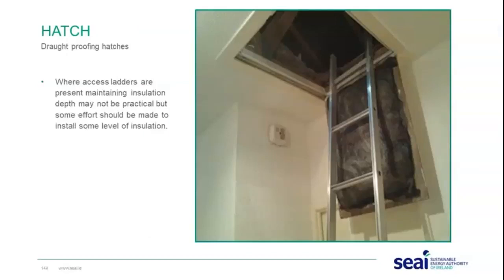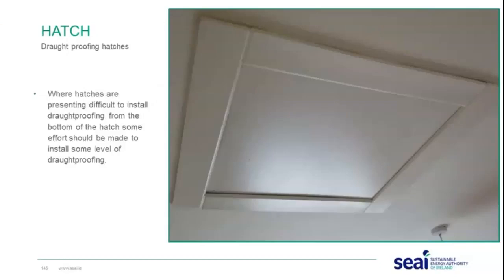Good hatch compression is becoming increasingly important in buildings, as hatches with poor compression will result in poor air tightness. Where access ladders are preventing maintaining an insulation depth, it may not be practical but some effort should be made to install some level of insulation. Where hatches present difficulty in installing draft proofing from the bottom, some effort should be made — for example, using stick-on draft proofing — as long as the hatch is draft proofed.